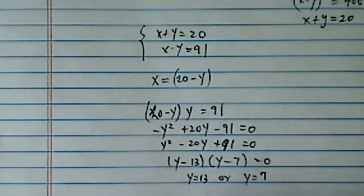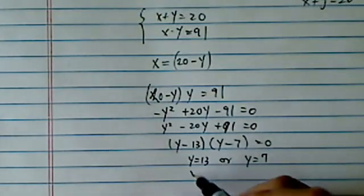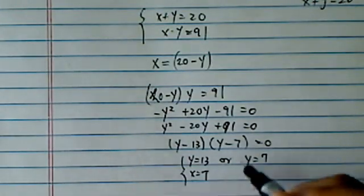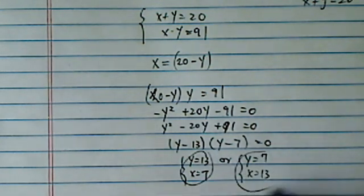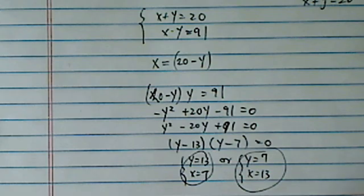Since x plus y equal to 20, of course, then x equal to 7. So either way, the two numbers you're looking at is 7 and 13.